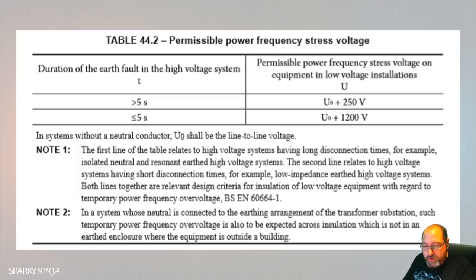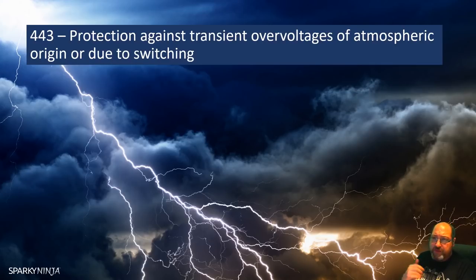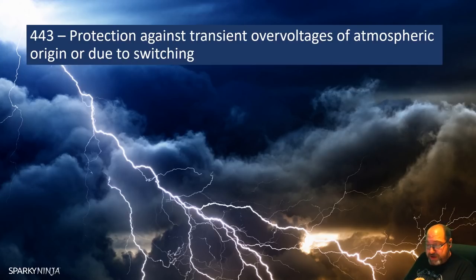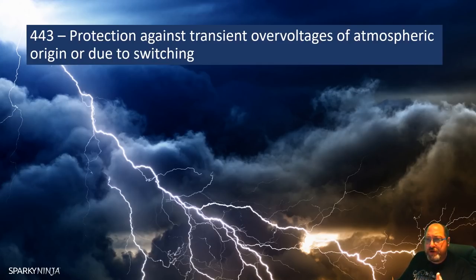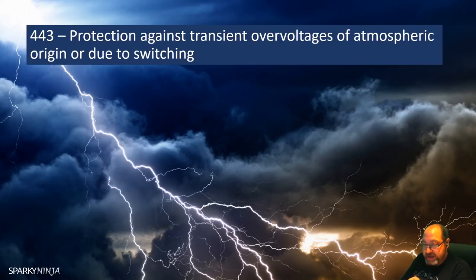Moving on to atmospheric origin — instead of the high voltage fault problems, let's discuss protection against transient overvoltages of atmospheric origin or due to switching. In the 18th edition they've rewritten this with a completely different risk assessment method approach. This section deals with the protection of electrical installations against transient overvoltages of atmospheric origin — such as lightning strokes — which are transmitted by the supply distribution systems including direct strikes, and against switching overvoltages generated by equipment in the installation.